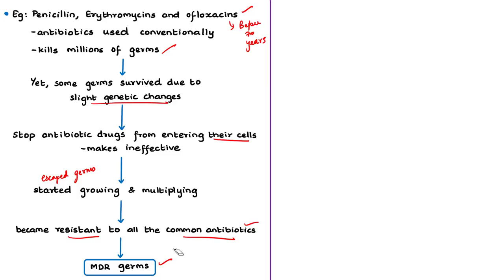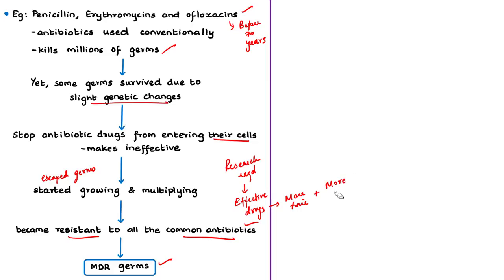Scientists and drug firms need to conduct basic and fundamental research into the biology of MDR germs and develop effective drugs to fight them. This process typically takes a decade or more and requires billions of dollars of investment per drug. The problem is that companies have invested billions to develop these drugs but cannot find a way to make money by selling them. This is because most antibiotics are prescribed for only days or weeks, unlike chronic disease drugs for diabetes, arthritis, or cancer, which are prescribed long-term and generate sustained profit.